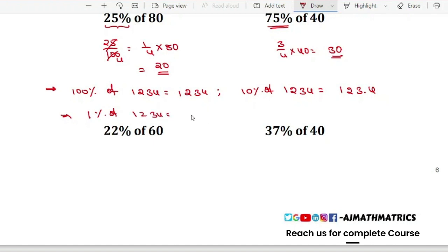So if it is asking 10 percentage, put the decimal from the right hand side after one digit. If it is asking about 1 percentage, put the decimal after two digits from the right hand side. Now let's solve 22% of 60.